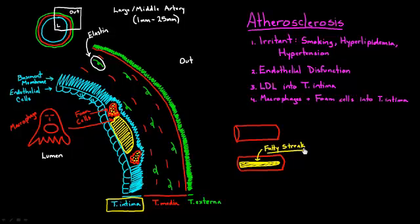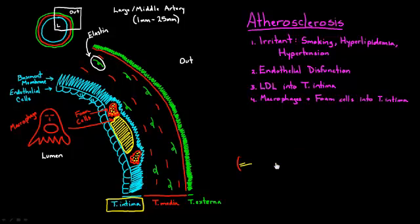All right, so we left off talking about the way that a fatty streak is made. And now I'm actually just going to take a step back, clear out some of this stuff. You've understood the first half of how this process of atherosclerosis happens, and we're going to finish off the second half.